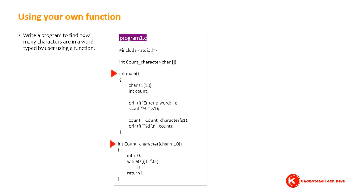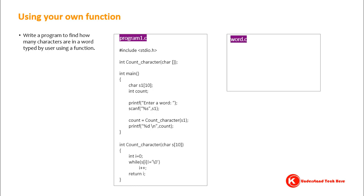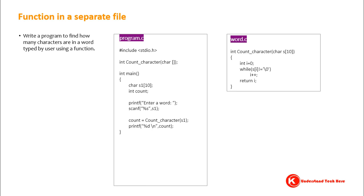But it doesn't have to be so. In fact, it's better to separately keep main in one file and the function or functions in another file. So let's remove function countCharacter from the file program1.c and put it in a separate file called what.c. Once we put the definition of the function in a separate file, we don't need to have the declaration of the function here, so let's delete this line.